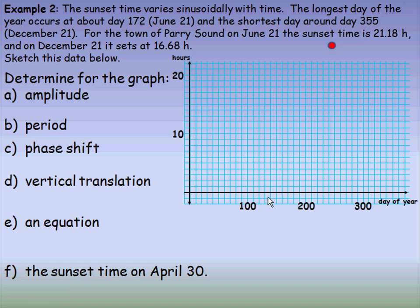First, on day 172, which would be about right here, we plot 21.18 hours. For December 21st, day 355, we put a dot at 16.68 hours. I'm also going to plot the point at the beginning of this cycle, which is 10 days before the start of this year. When we join those with a smooth curve, we can see it's certainly a periodic sinusoidal function.